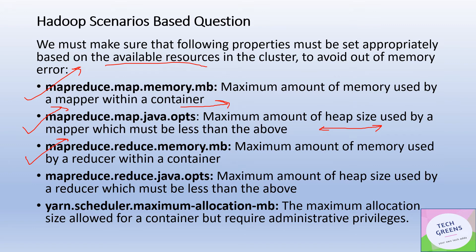`mapreduce.reduce.memory.mb` is the maximum amount of memory used by a reducer within a container. Similarly, the supplementary property for heap allocation on the reducer side should be less than that value. A very important property — mostly used by cluster admins — is `yarn.scheduler.maximum-allocation.mb`, which defines the maximum allocation size for a container that can be scheduled by the YARN resource manager. This requires administrative privileges.